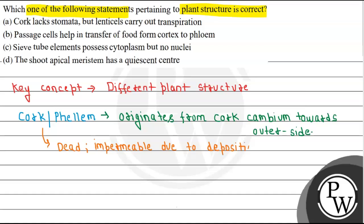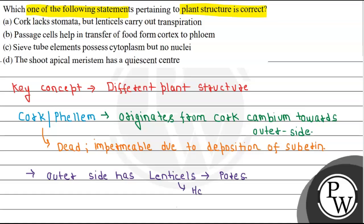Cork is dead. The core is made from the outer side, and as the epidermis falls, lenticels are present on the outer side. These lenticels are pores which help in gaseous exchange.